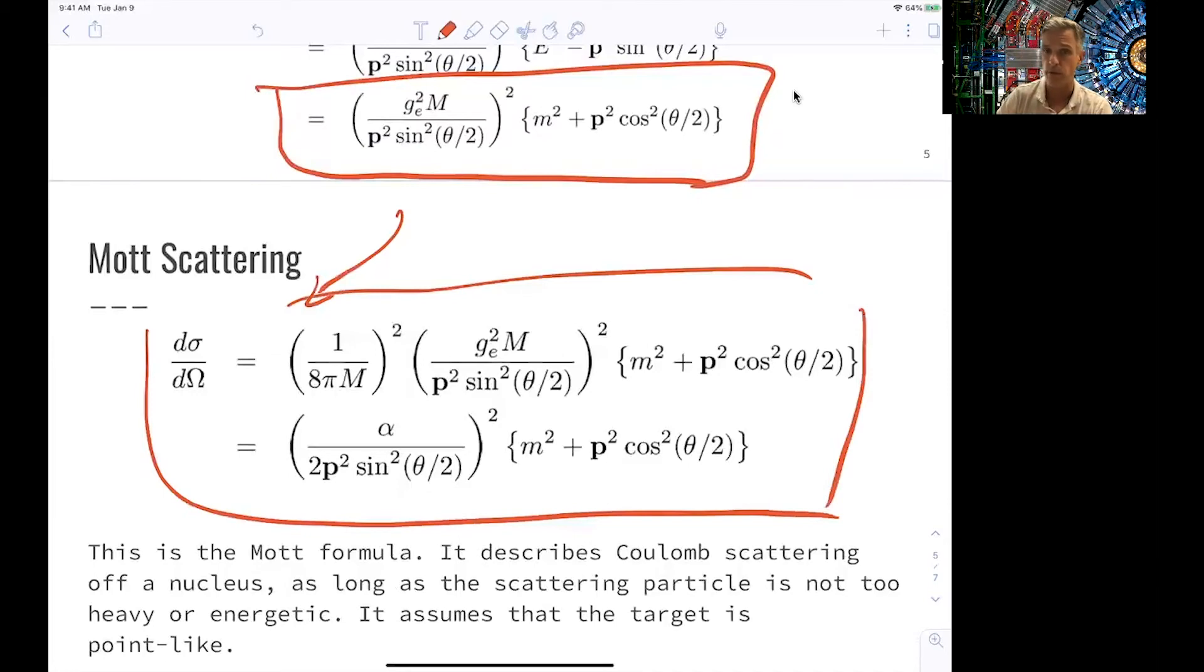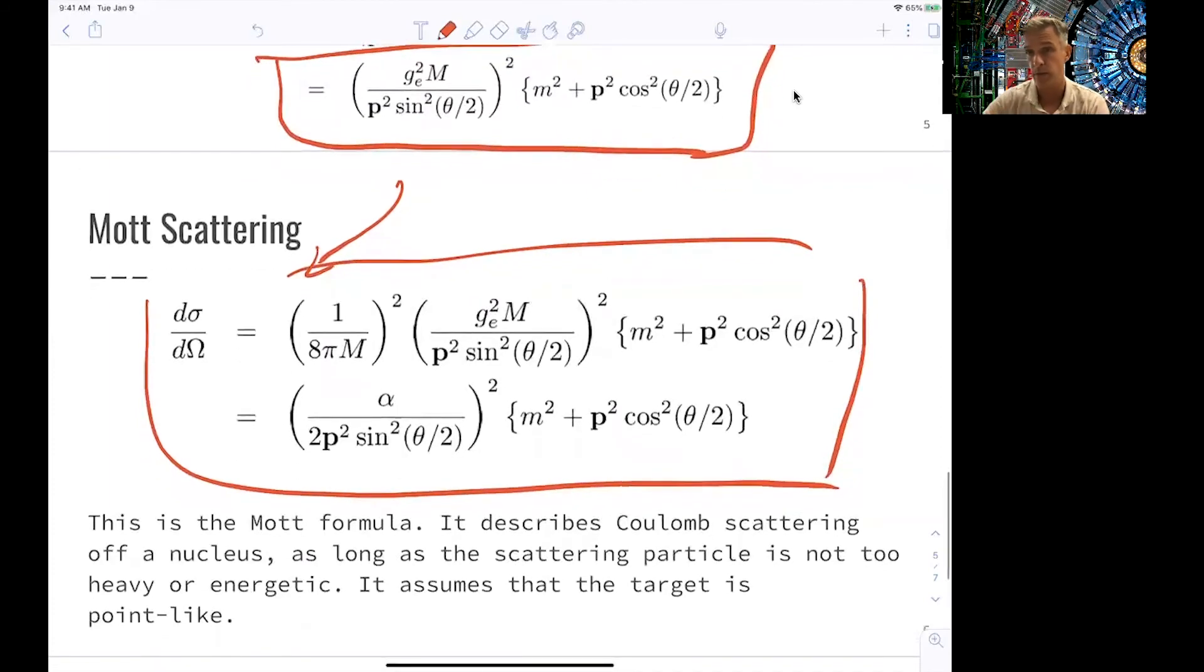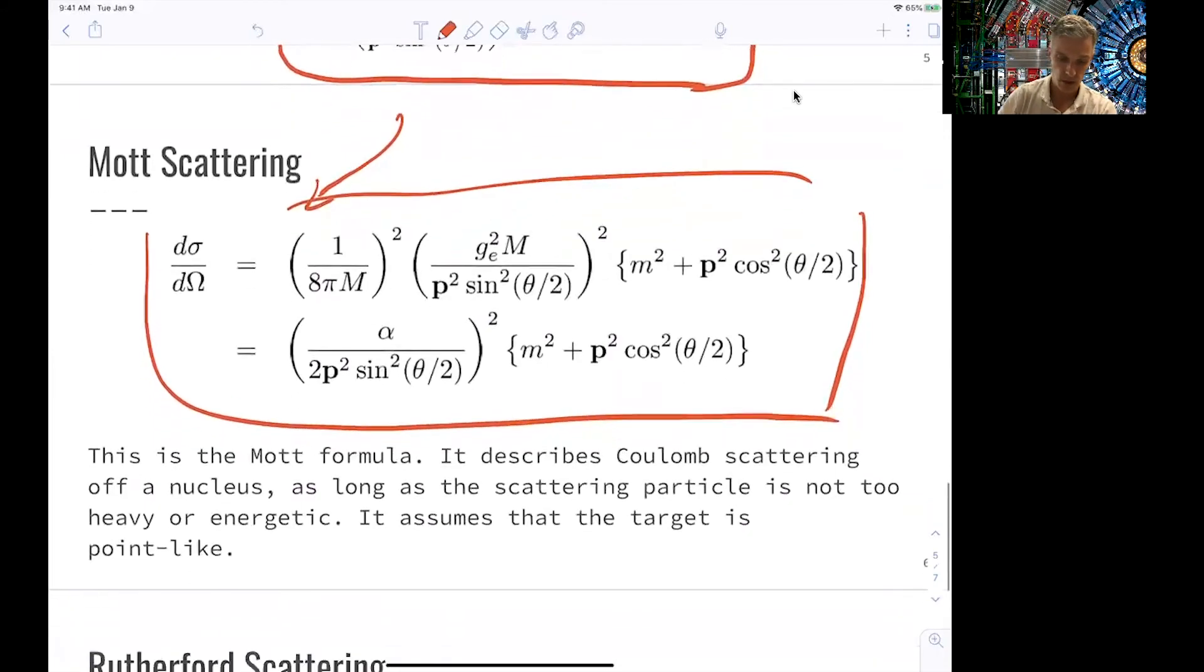So this Mott formula describes, for example, the Coulomb scattering, so the scattering of this e-photon on the electric charge of a nuclei. And the scattering particle is not too heavy and not too energetic, like an electron. We also assume that everything involved here is point-like. We haven't had any discussion on the charge distribution of the nuclei. We're assuming that this is a point-like particle.